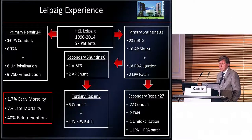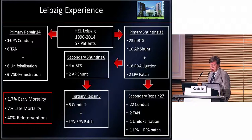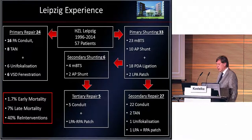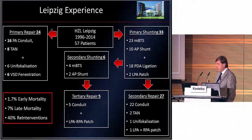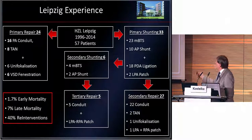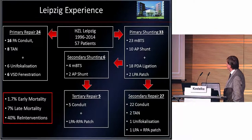What is our experience? In 16 years, we have had 57 patients. As primary repair in the neonatal period, we did 24 patients — 16 with PA conduit, 8 with transannular patch — 6 patients with unifocalization, and 6 with VSD fenestration. The patients with unifocalization all got a fenestration. We did the fenestration on the left side of the VSD patch, placing a monocast valve allowing flow of blood from the right side to the left side. For primary shunting in the neonatal period: 33 patients — 23 with modified Blalock-Taussig shunt, 10 with an aortopulmonary shunt — with PDA ligation at the time of operation and two patches in these patients.